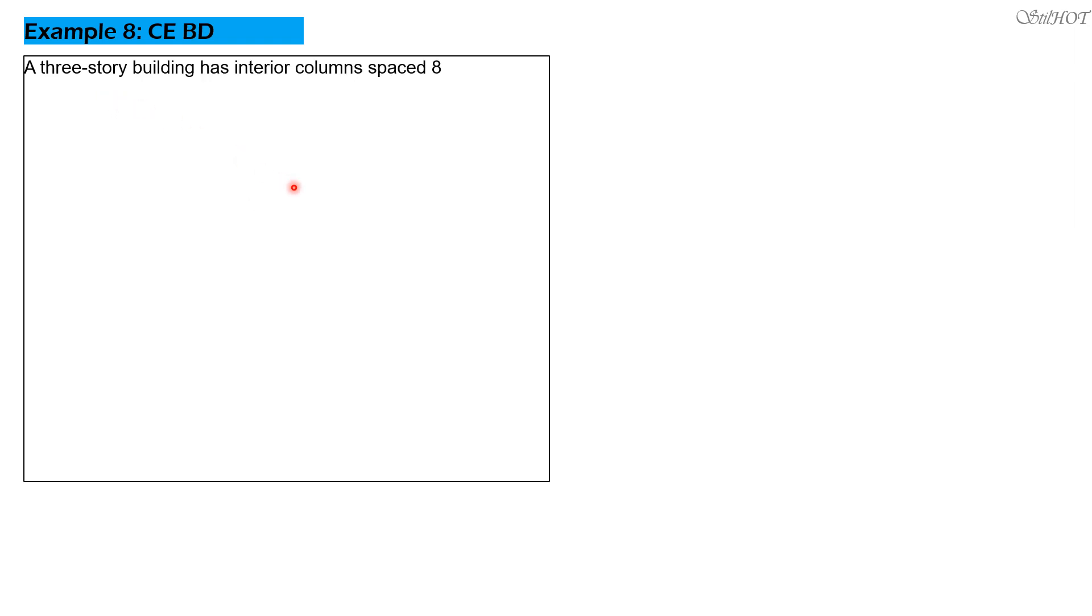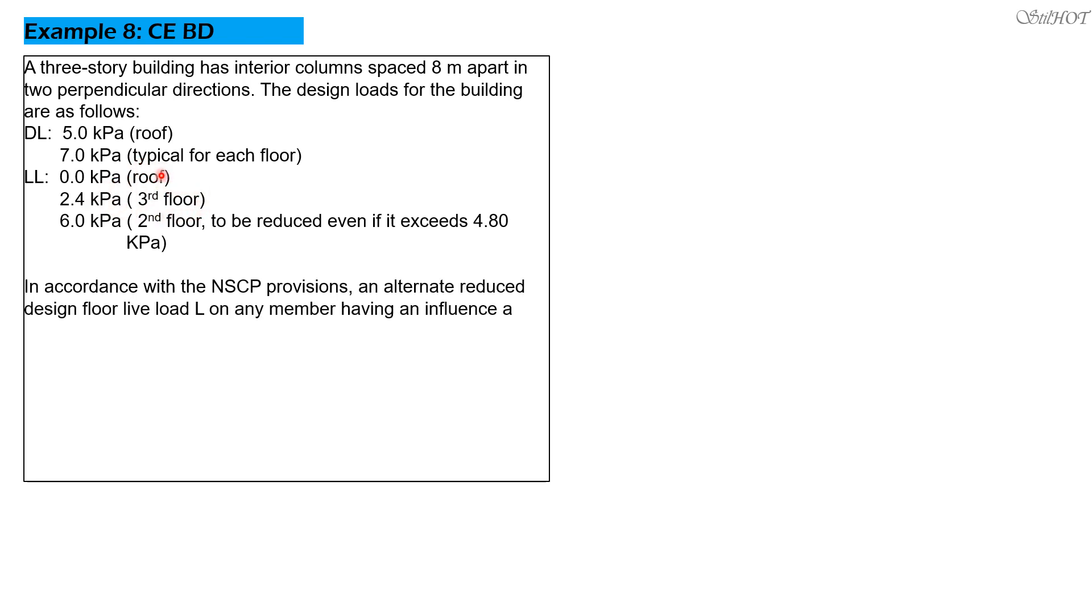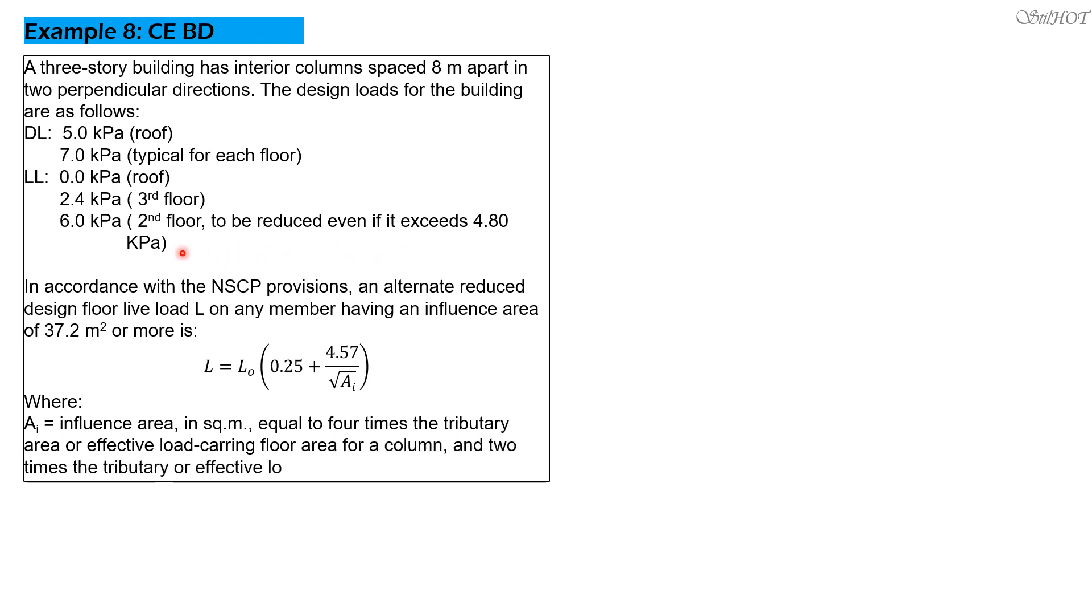A three-story building has interior columns spaced eight meters apart in two perpendicular directions. The design loads for the building are as follows: dead load is 5.0 kPa for the roof and 7.0 kPa typical for each floor. Live loads are zero kPa in the roof, 2.4 kPa in the third floor only, and 6.0 kPa from second floor. This is a three-story building to be reduced even if it exceeds 4.8 kPa because actually the provisions of the code is not even.